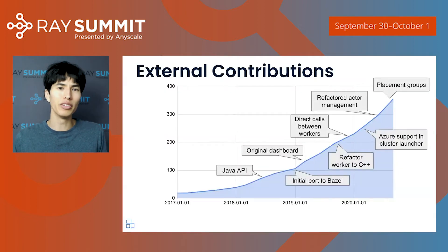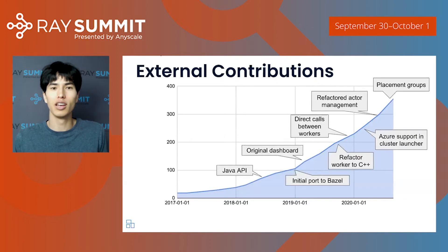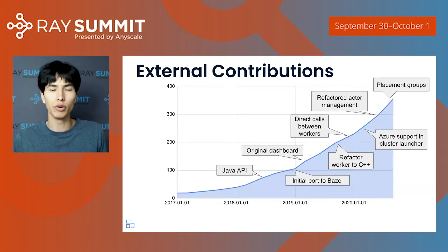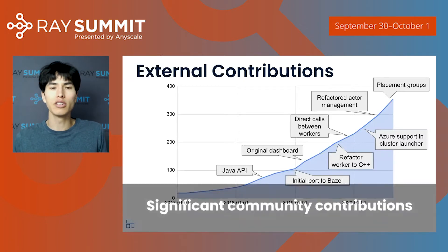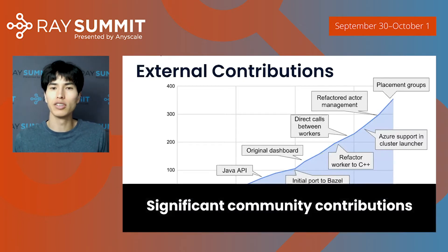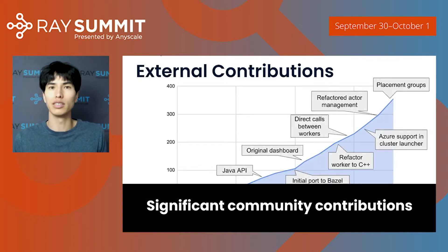Importantly, these external contributions are not tiny contributions. We're talking about major features like adding support for new languages, adding a dashboard, major refactorings of the worker code and the backend, support for additional cloud providers, and so on. These are serious contributions, often coming from companies with multiple people working to improve Ray. That's something we look at as a sign of a strong community.